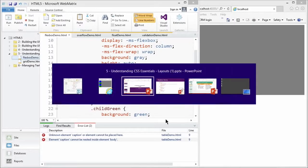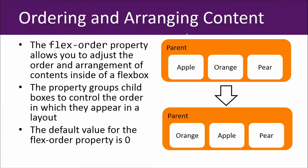Flex boxes. Pretty awesome. You can also order and arrange the content inside of a Flex box by using the Flex order property. The default value for the Flex order property is zero for each of the elements. And if you go ahead and increase that value, the order will change. So in this particular example, we have apple, orange, and pear all have a Flex order property value of zero. And so with the parent, if we change the value of orange to one and then leave apple at zero and pear at zero, then orange will all of a sudden move to the front. So it's a good way to reorganize and rearrange the different Flex box items.